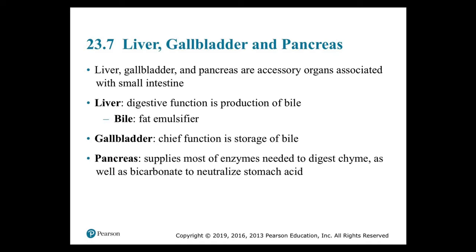Section 23.7: the liver, gallbladder, and pancreas — these are accessory organs associated with the small intestine. The liver's digestive function is to produce bile, which emulsifies fats (it is not an enzyme). The gallbladder stores bile. The pancreas supplies most of the enzymes needed to digest chyme, as well as bicarbonate to neutralize stomach acid.